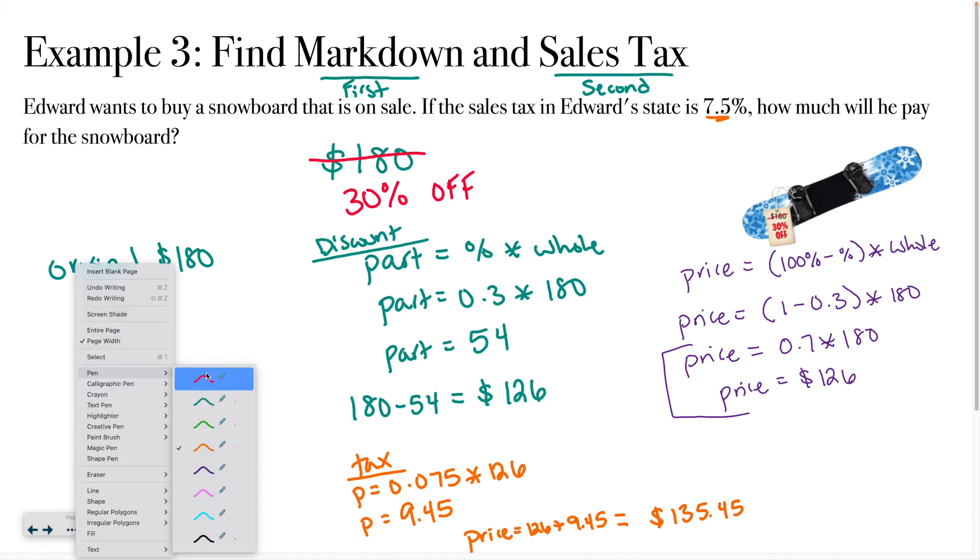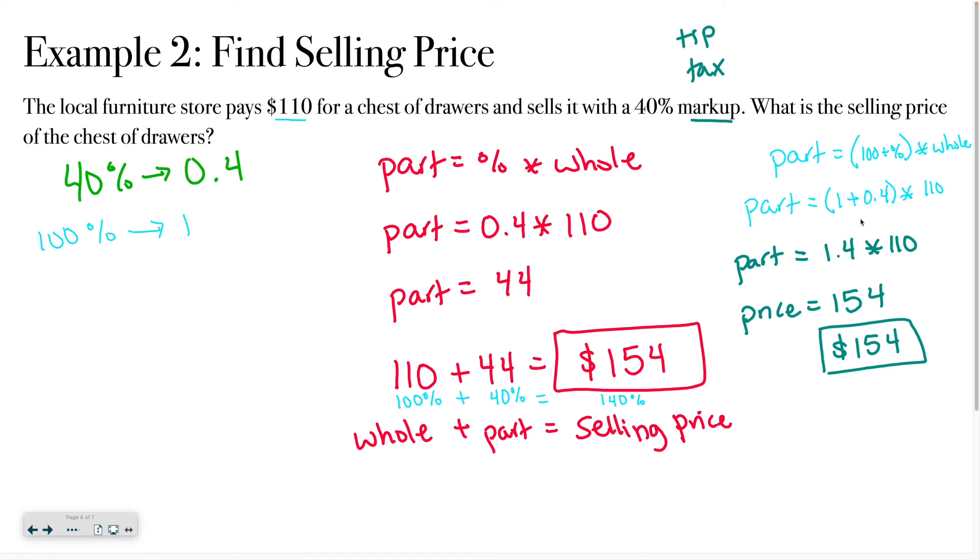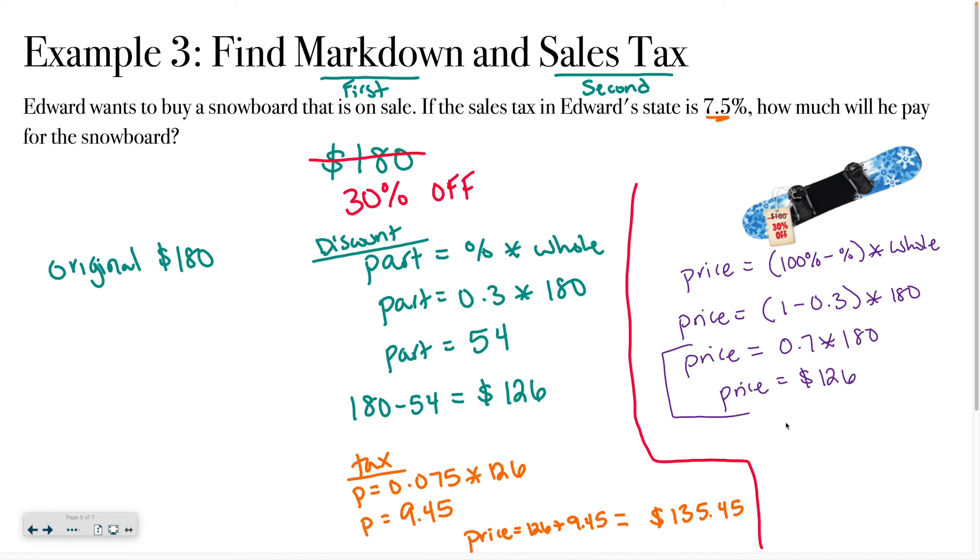Or if you want to go a slightly different route, another option that you could do is where we practice that percent markup that we did before, where we do the 100% plus whatever. So I have my percent markup, I'm going to label this tax price. My percent markup is 7.5%, so my decimal would be 1.075 times 126. And if I were to type that in, I end up at the $135.45. And I have my final answer right there.